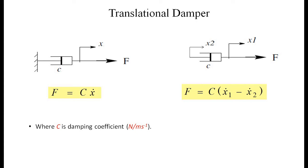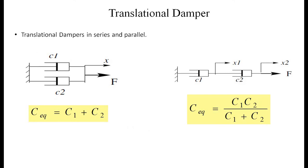If the damper is fixed to a wall, the equation is F = c·ẋ. If the damper has two free ends with displacements x1 and x2, then F = c·(ẋ1 − ẋ2). For translational dampers in parallel: c_eq = c1 + c2. For dampers in series: c_eq = c1·c2/(c1 + c2).